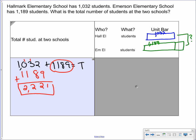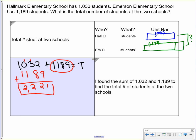So finally, we need to explain how we got our answer. I found the sum of 1,032 and 1,189 to find the total number of students at the two schools. That's a pretty good explanation of how we did it.